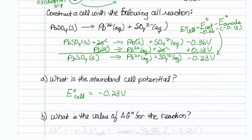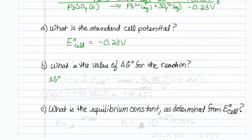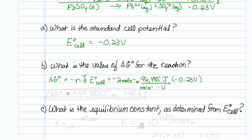What is the value of delta G naught for the reaction? Delta G naught is equal to negative N F E_cell. N is my moles of electrons transferred, so that's two moles of electrons. The Faraday constant is 96,485 joules per mole electron-volt — because a joule per volt is a coulomb — and my voltage is minus 0.23 volts. So my delta G naught turns out to be plus 44,383 joules per mole of reaction, or plus 44 kilojoules.